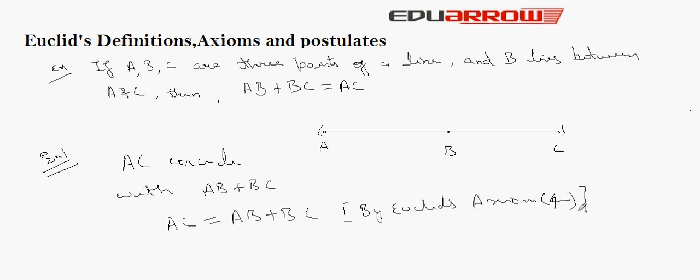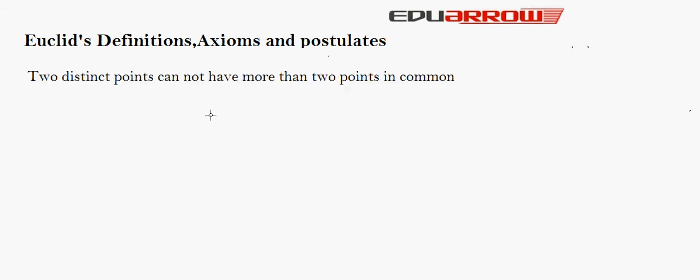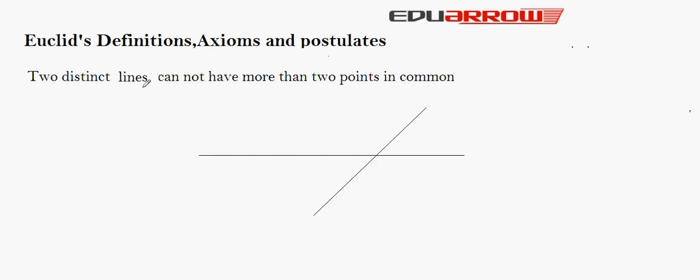Another important point to note: two distinct lines cannot have more than one point in common. As we can see here, two distinct lines AB and CD have only one common point, which is O.